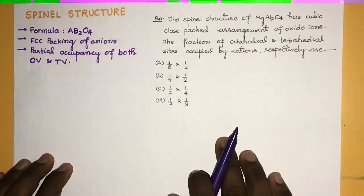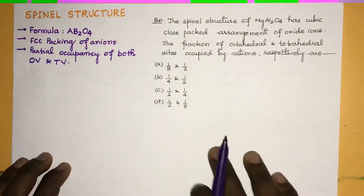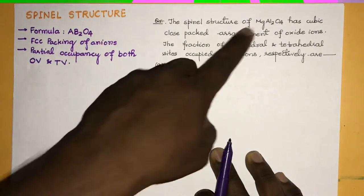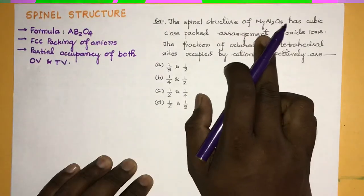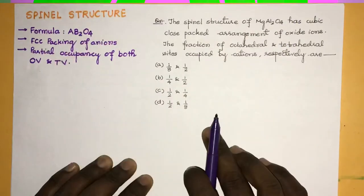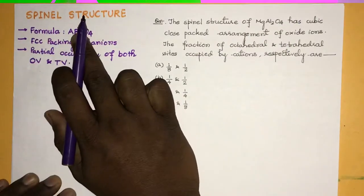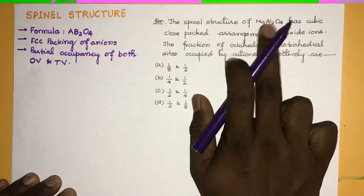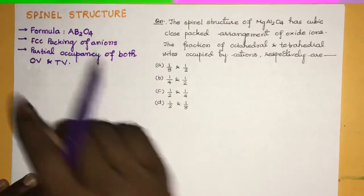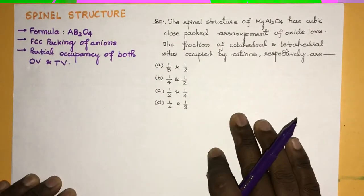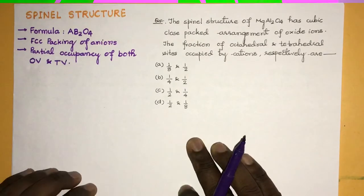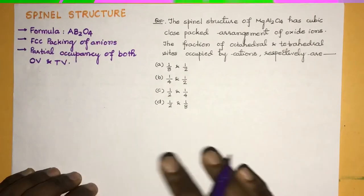Now let's solve a simple problem based on it. This is the AB2O4 type of structure, like MgAl2O4, where A is Mg, B is Al, and there are 4 oxygen atoms. Here Mg2+ and Al3+ are the cations, in which oxide ions form the FCC lattice and the cations fill the octahedral and tetrahedral voids partially, not completely.